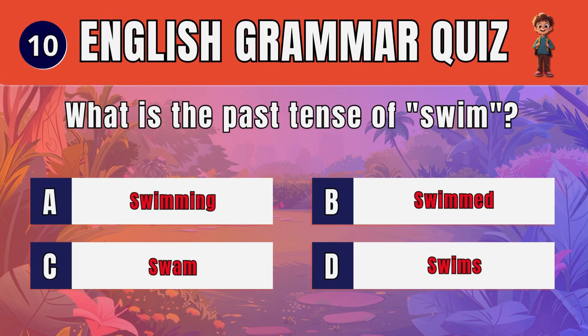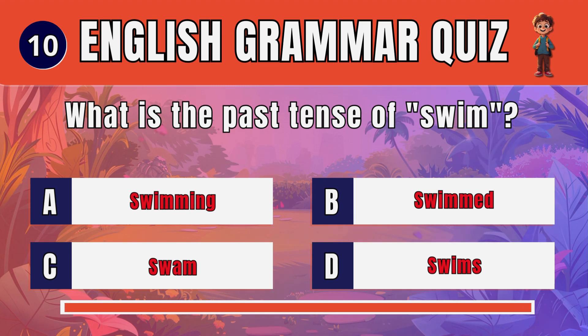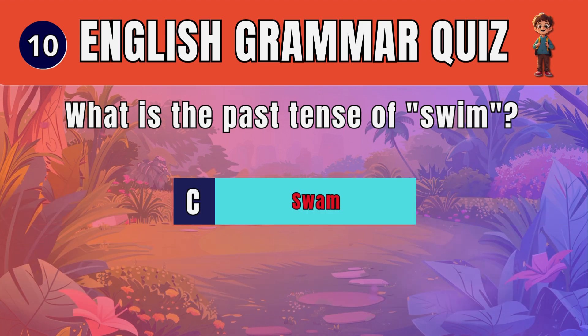Question 10. What is the past tense of swim? The answer is: C. Swam.